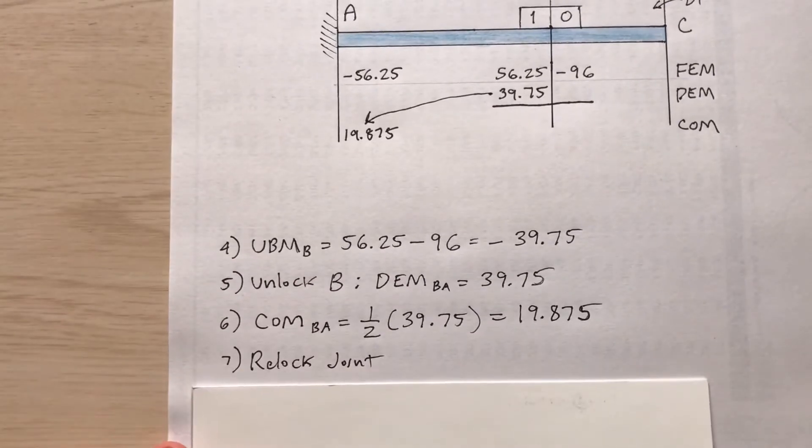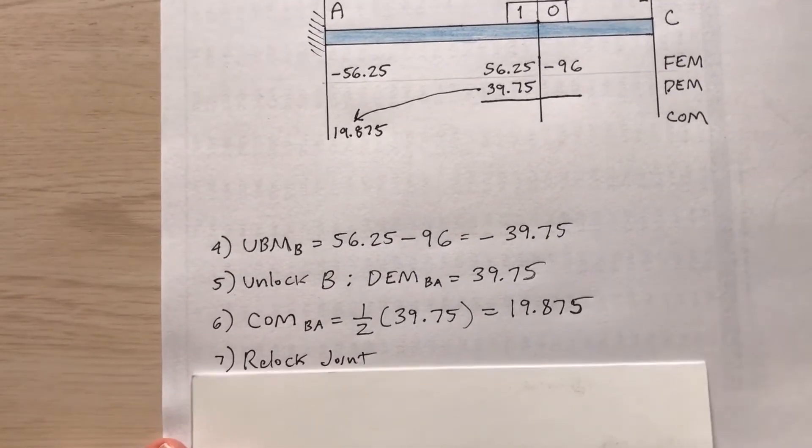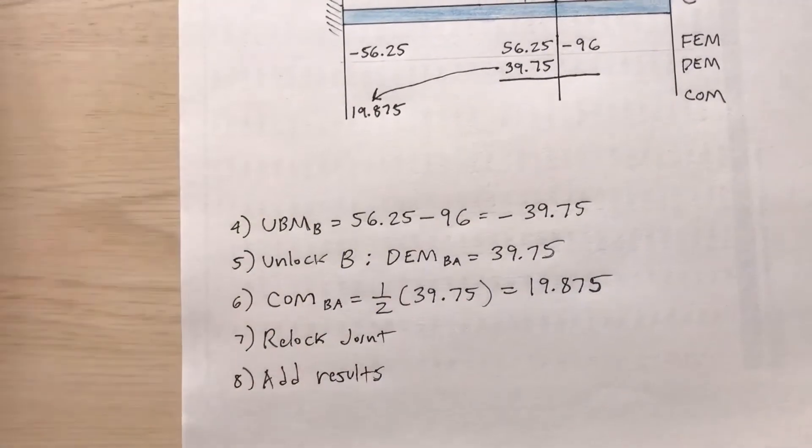Step seven, relock the joint, that is joint B. Joint B is balanced. So now add the results. Step eight, add the results.